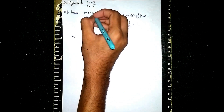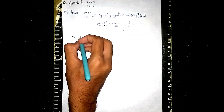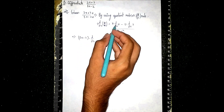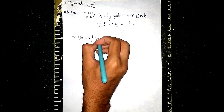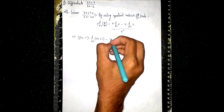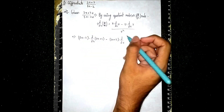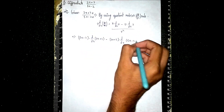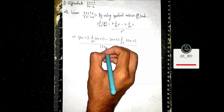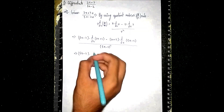Now substitute the values. Here u is (2x + 3) and v is (5x - 2). So we write: (5x - 2) into d/dx of (2x + 3), minus (2x + 3) into d/dx of (5x - 2), all divided by (5x - 2) squared.